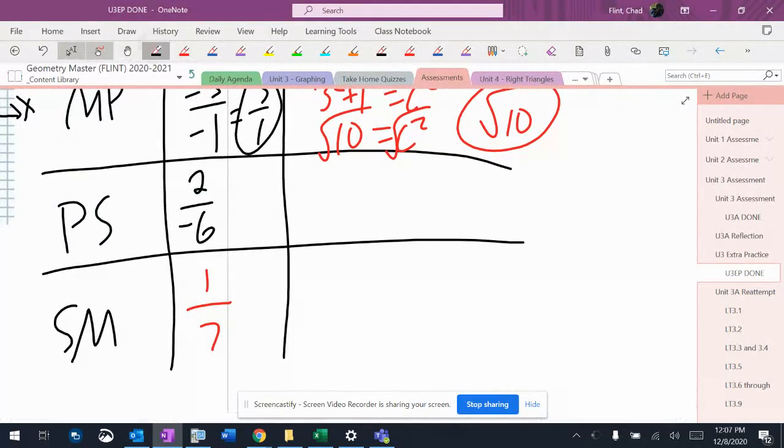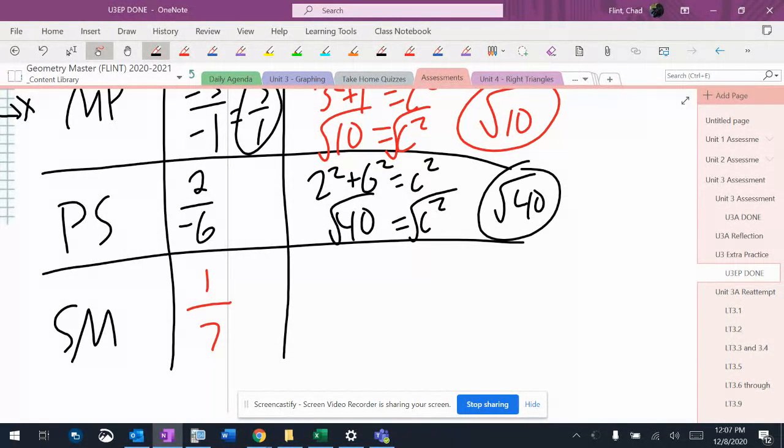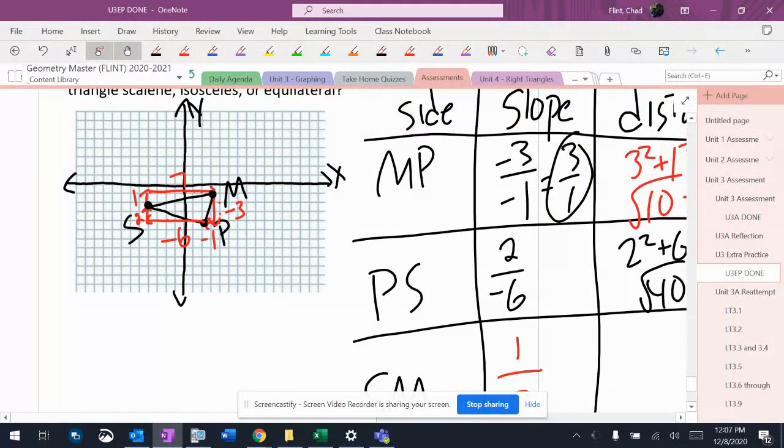And then I've got a two and a six for the next one. That's a 40. Square root of 40. So it's not going to be equilateral - equilateral has to have all three sides the same. And then this last side is a one and a seven.